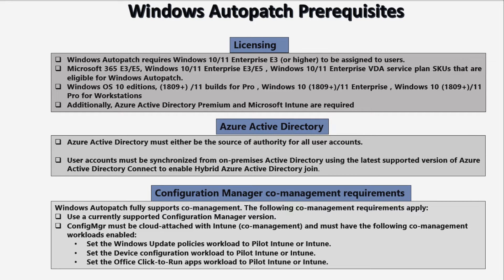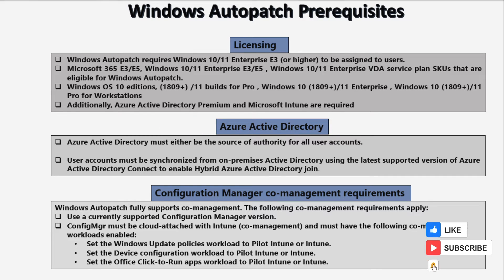Windows operating system version 10 edition 1809 or above, or Windows 11 builds for Pro, Enterprise, and Pro for Workstation are eligible for Windows Autopatch. Additionally, we should have Azure Active Directory Premium license as well as Microsoft Intune.